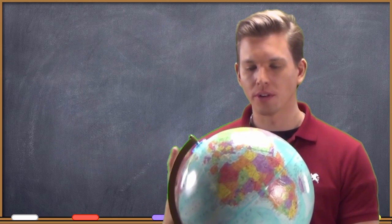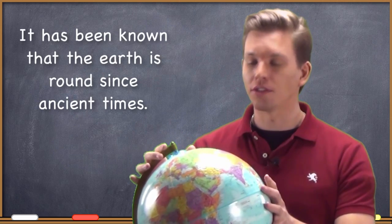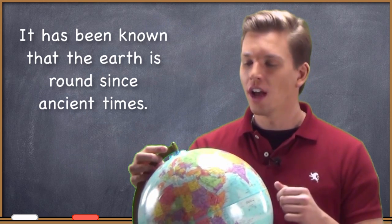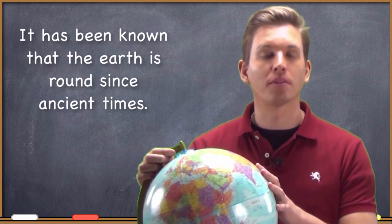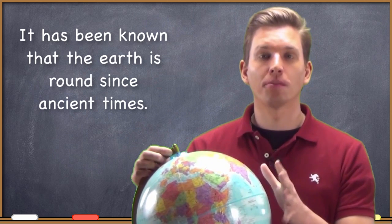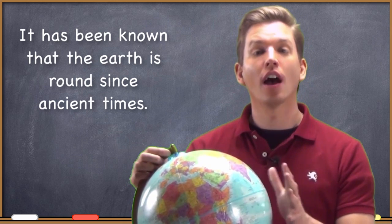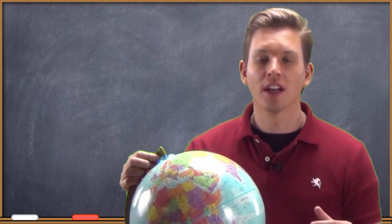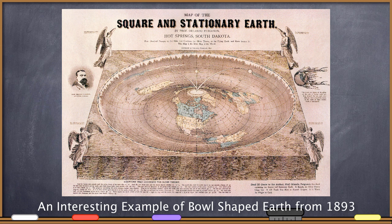We have actually known, as human civilization, that the Earth is round for some time. Often people think that knowledge of a flat Earth was common or standard knowledge up until relatively recently, historically speaking. But as it turns out, people have known that we live on something round for a long time. Because the Earth is round, you can start in one location, travel around, and get back to your starting location.